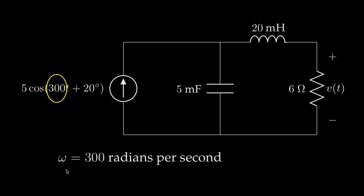This frequency is 300 radians per second, and we can use this frequency to associate an impedance with each of the passive elements in the circuit.